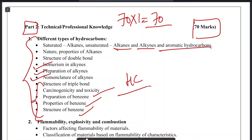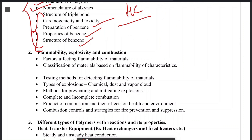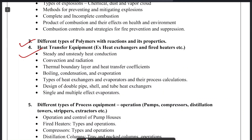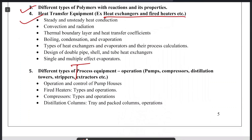Next is flammability, explosivity, and combustion. If you want notes regarding this portion — flammability, explosivity, combustion, heat transfer equipment — do comment in the comment section and we will try to send notes to you. This portion belongs to chemical engineering or industrial chemistry. Also covered are different types of polymers, their reactions and properties, heat exchangers and fired heaters.